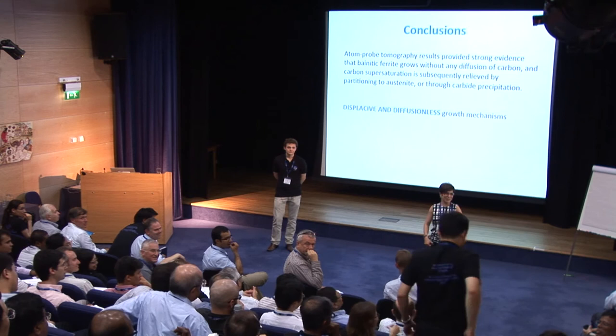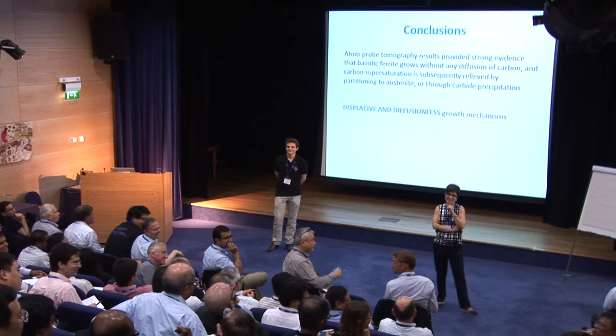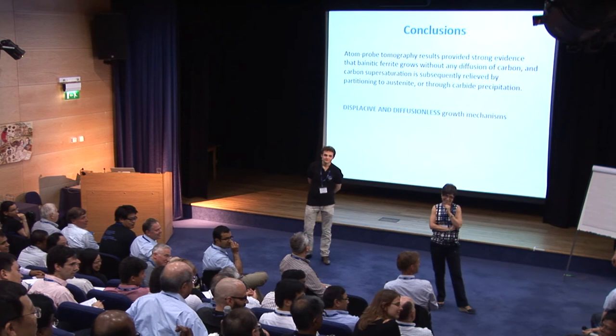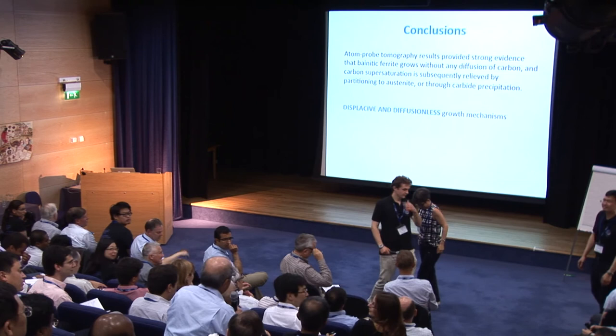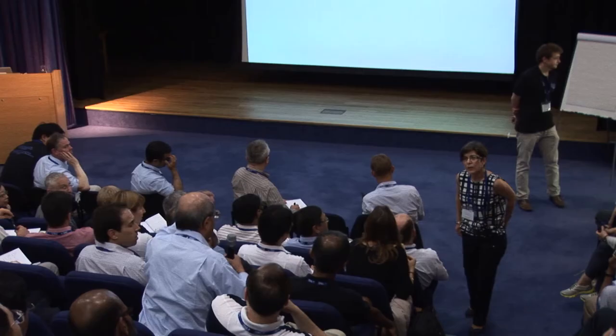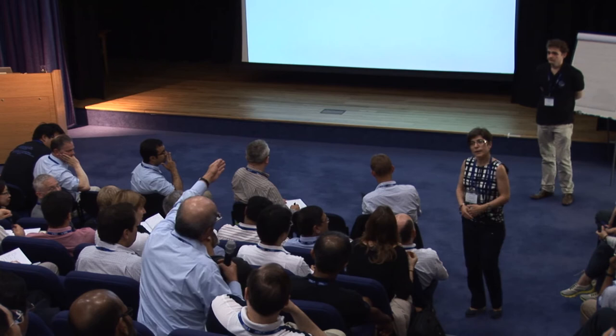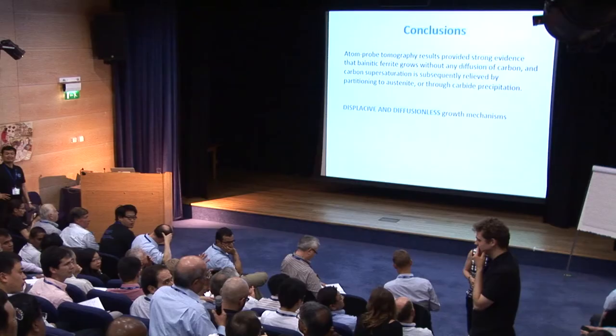Question: Enrichment of carbon atoms at dislocations — does it not involve diffusion of carbon? But your conclusion is that the process is without diffusion. Answer: You are right that since we have dislocations at the interface, carbon partitioning to the retained austenite is not as high as we can expect — it's like how much carbon can transfer will be lower. So enrichment of carbon at dislocations does need diffusion. But those are secondary processes.